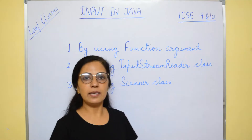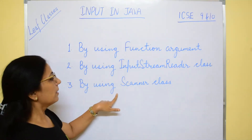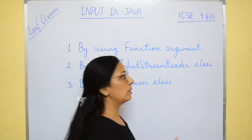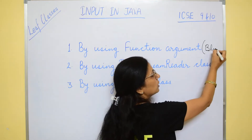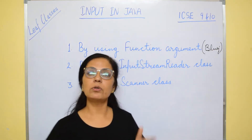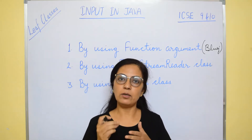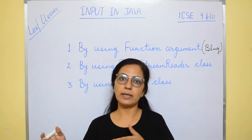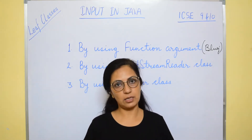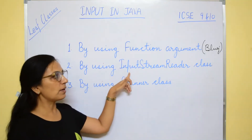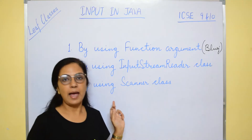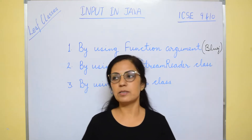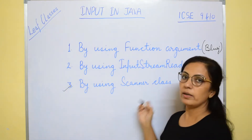You know that we can enter values in Java using three methods: by using function argument — this method is actually not for Java language, it is only available in BlueJ. When you use function argument, you have to give the values for each argument, a text box appears, you put the values, and then those values are taken into the function. Then we have InputStreamReader class and Scanner class methods. Since we are following strictly ICSE syllabus, as per your ICSE syllabus you have Scanner class method only for input.